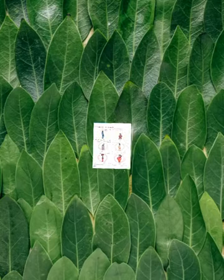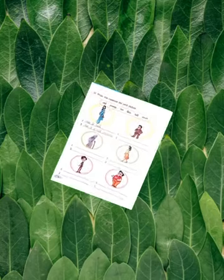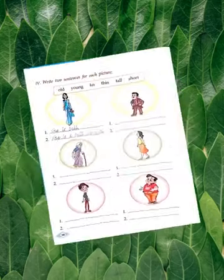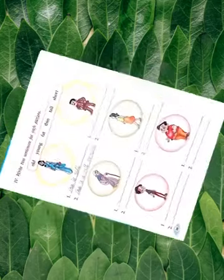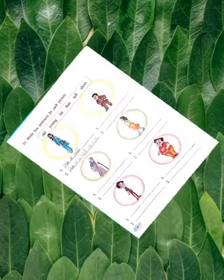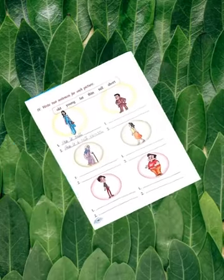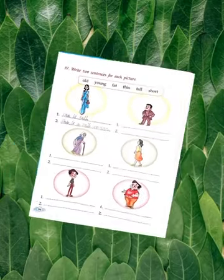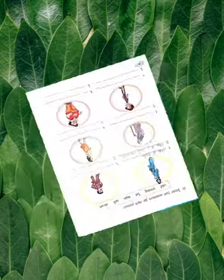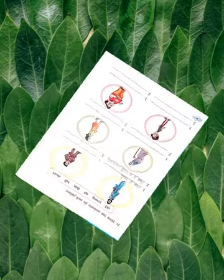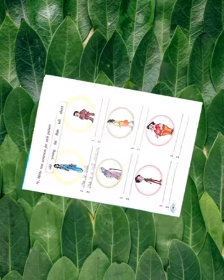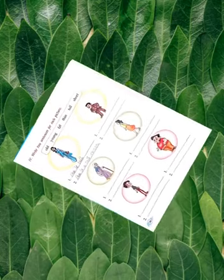Hey dear children, in the previous video we did some book exercises of the Grammar Lesson 5 called 'Describing Words.' Today we will do some other exercises which are given in page number 38 and 39, so everyone look at your mobile screen and listen to me carefully.